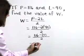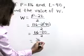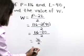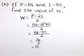116 minus 80 is 36 and 36 divided by 2 is 18 units. The width in part B is 18.